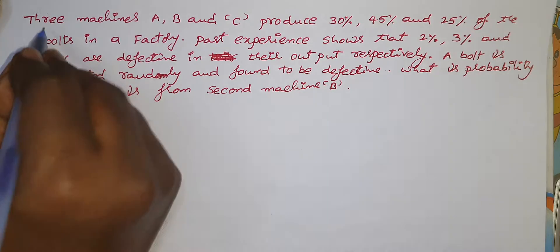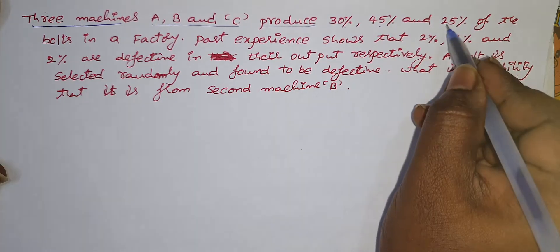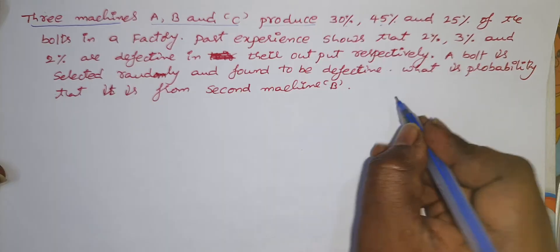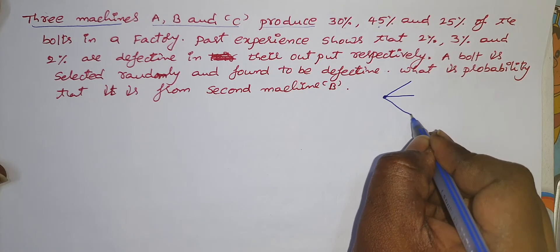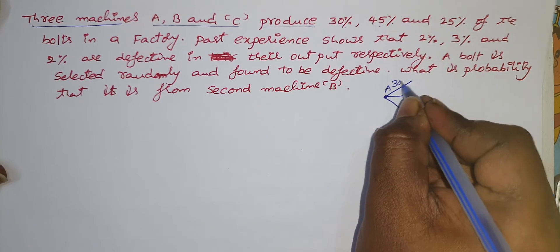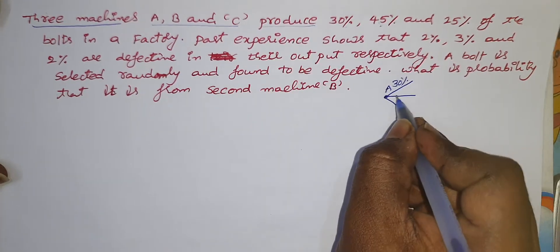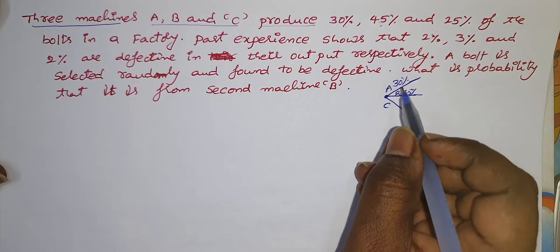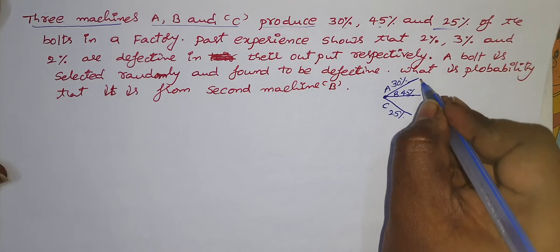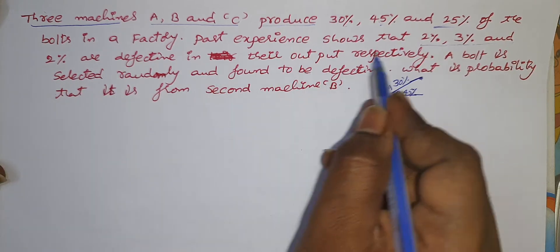See the statement of the given problem. Three machines named A, B, and C produce 30%, 45%, and 25% of the bolts in a factory. There are three machines in the factory. Out of 100% output, machine A produces 30%, machine B produces 45%, and machine C produces 25% of the total output. If you add all these percentages, we get 100%. Past experience shows that 2%, 3%, and 2% are defective in their outputs respectively.